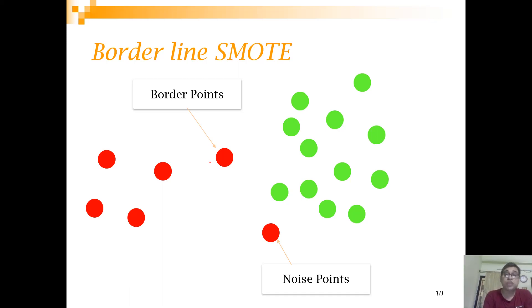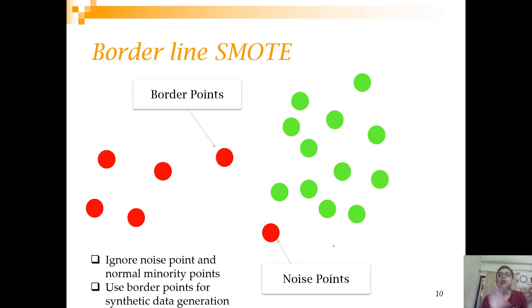When you apply SMOTE now, what you are going to do is you are going to generate more of these border points, because these are the points which are difficult to classify, and ignore the noise points. This is how it can handle that problem of outliers that are present in the majority class. But you can understand that Borderline SMOTE ends up giving more importance to such extreme observations and ignores this observation, which is not a good idea.